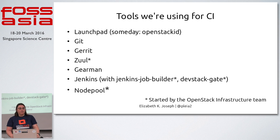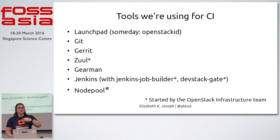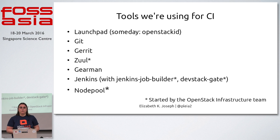We're using Launchpad for authentication and bug reporting, and hoping to move to OpenStack ID for authentication soon. We use Git for revision control. Gerrit is our code review system. Zuul is a gatekeeper that makes sure all changes are merged together and tested properly. GearMan tells Zuul which Jenkins masters it can run tests on. We have a series of Jenkins masters and a fleet of currently about 600 to 800 VMs that we do all our testing on, controlled with a tool called NodePool.